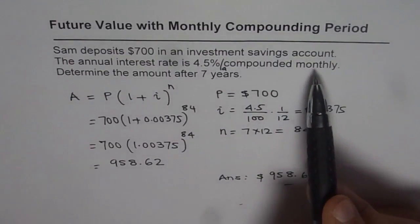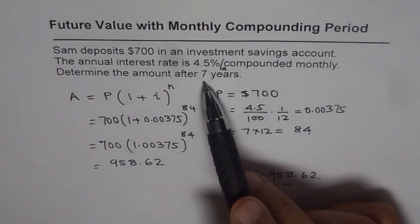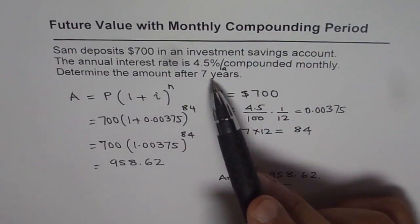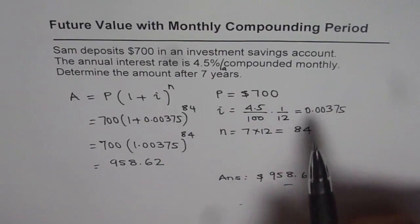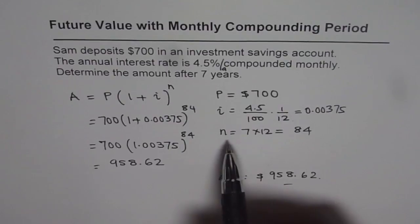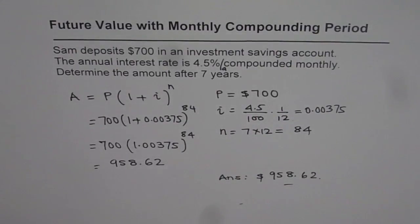And since the compounding period is monthly, the number of times it gets compounded gets multiplied. 7 years means 7 times 12. So that is how I and N values are calculated, and then we calculate the future value.